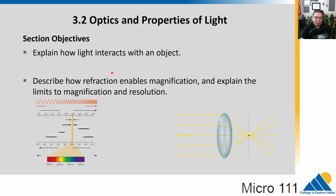Our microscopes use light, and light behaves in certain ways, which is called optics — the study of that is called optics. That really has to do with how light is bent and moves through surfaces. We're going to talk about how light interacts with an object, and then talk about this property called refraction, which makes magnification possible, and talk about the limits of that for light microscopy.